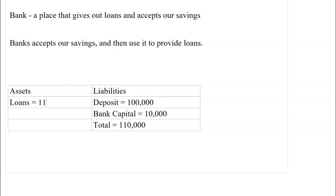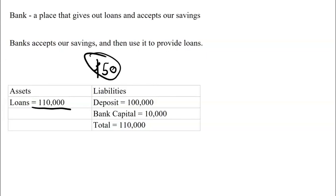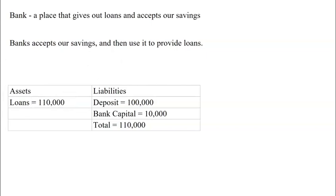However, if all the money is tied up in loans, and a depositor wants to withdraw $50, the bank cannot pay them — and that creates a serious problem. So the bank keeps some money set aside as cash reserves. Let's say the bank keeps 10% of deposits as reserves. Out of $100,000 in deposits, $10,000 stays as cash reserves and $90,000 can be given out as loans.